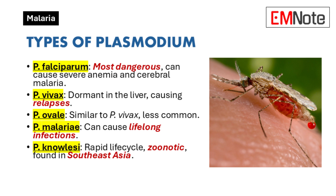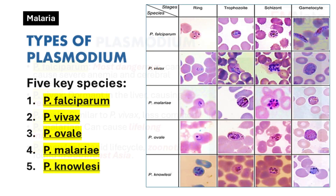Plasmodium knowlesi, originally a parasite of macaques, has been recognized as a cause of human malaria in Southeast Asia. It has a rapid 24-hour life cycle, which can lead to severe infections quickly, sometimes resulting in death if not managed adequately. Its emergence highlights the importance of understanding zoonotic transmission dynamics. Recognizing these five types of Plasmodium enables healthcare professionals to tailor prevention strategies and treatment protocols effectively, ultimately improving patient outcomes.